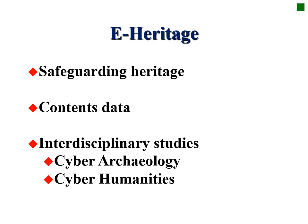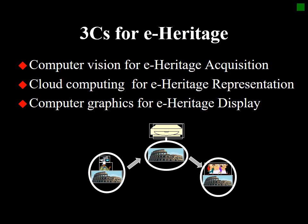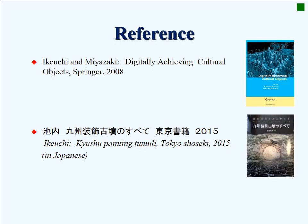The eHeritage Project aims to develop techniques for safeguarding heritage, creating digital contents, and interdisciplinary studies such as cyber archaeology, and to apply such techniques to real heritage sites. eHeritage consists of three branches of computer science: computer vision for eHeritage acquisition, cloud computing for eHeritage representation, and computer graphics for eHeritage display. This slide shows references which describe our project in detail.